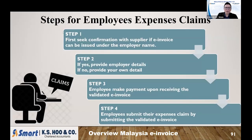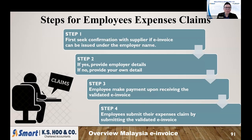This is the process for expense claims during business trips. First, the employee should ask whether the supplier can issue an e-invoice under the company name. When the staff goes to buy supplies, pump petrol at a petrol station, or entertain a customer at an F&B outlet, ask first whether the e-invoice can be issued under the company name. If yes, provide the company details. If not, provide personal details. Then the employee makes payment, receives the e-invoice, and passes it back to the company to claim the money.